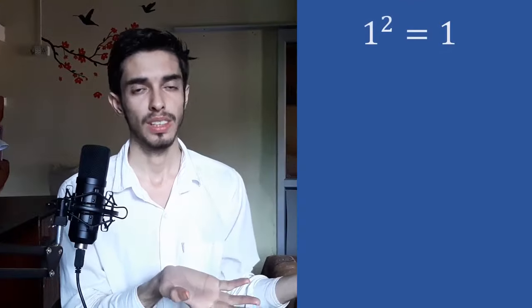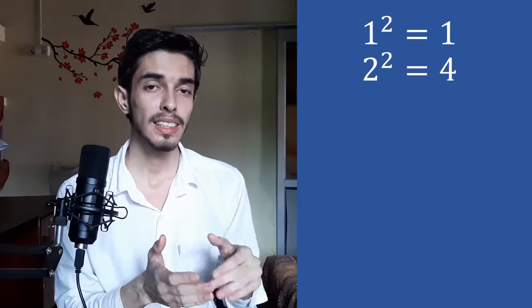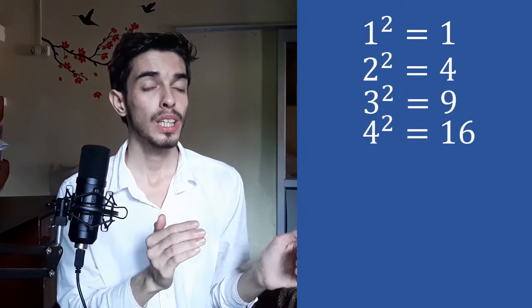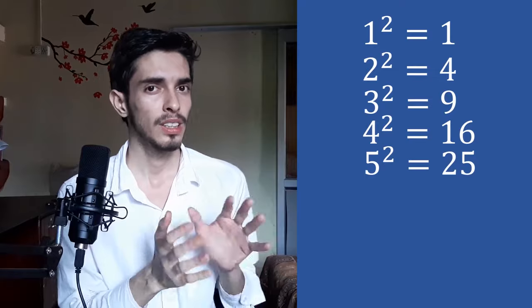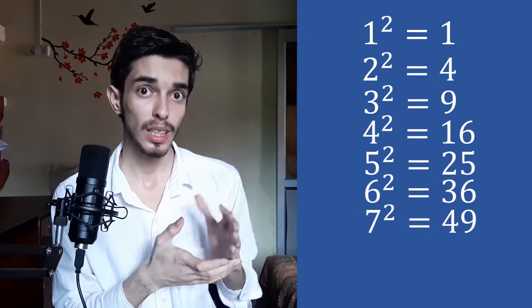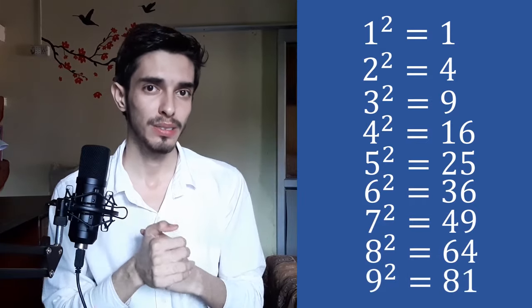So, the square of one is one. The square of two is four. The square of three is nine. The square of four is sixteen. The square of five is twenty-five. The square of six is thirty-six. The square of seven is forty-nine. The square of eight is sixty-four. The square of nine is eighty-one.